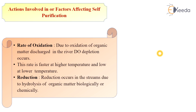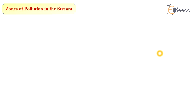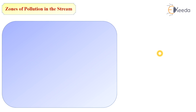These are the factors which affect the self-purification or natural purification of streams or water bodies. The next important point is the zones of pollution in the stream. There are different zones, and the sewage gets clarified by passing through these zones one by one.